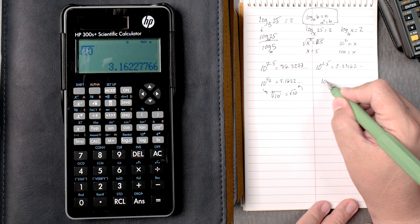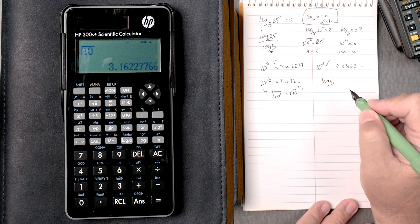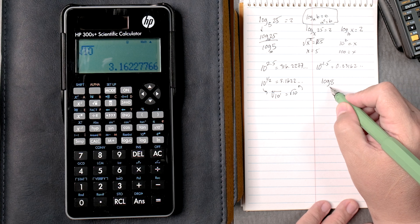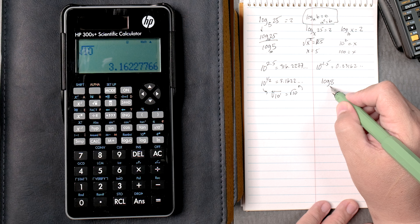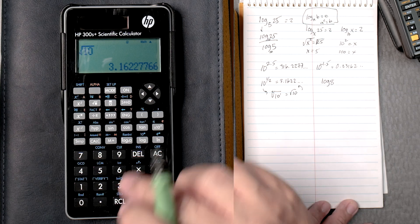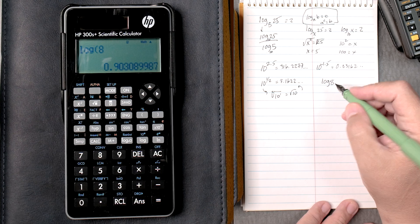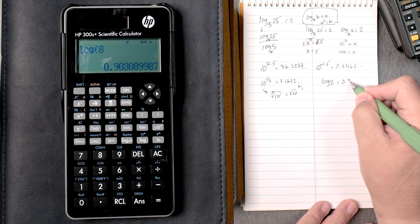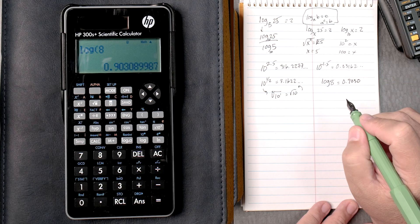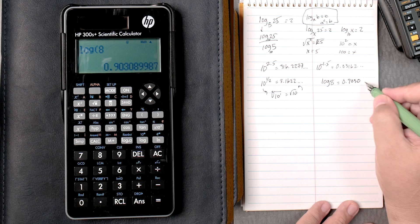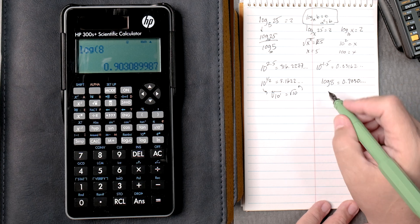So how about the log of 8? Assuming the assumption is that no base, that's a 10. So log 8 equals, it gives you 0.9030, and it keeps on going.